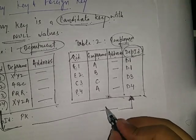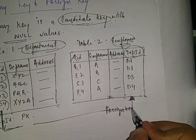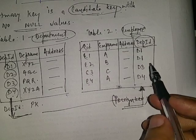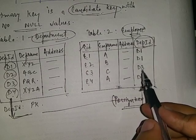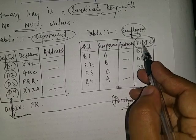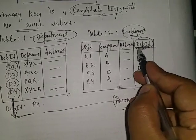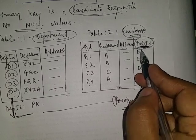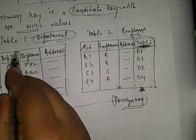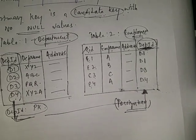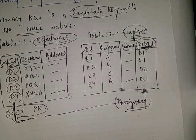Since department ID is being referenced from another table — that is, the department table — this department ID in the employee table is known as the foreign key. The rule is that the foreign key of any table should be the primary key in the referenced table. That means the foreign key here, which is department ID, should be the primary key of the table it is being referenced from — which it is, as we already mentioned. This is the concept of primary key and foreign key. To know the differences between primary key and foreign key, please refer to the next video.